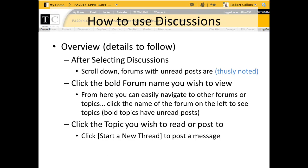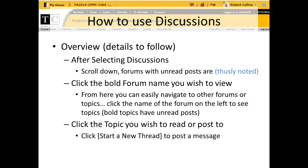How to use Discussions. Overview — details to follow. After selecting Discussions, scroll down. Forums with unread posts are thusly noted. Click the bold forum name you wish to view. From here you can easily navigate to other forums or topics. Click the name of the forum on the left to see topics. Bold topics have unread posts. Click the topic you wish to read or post to.